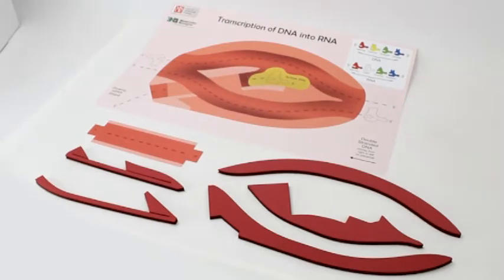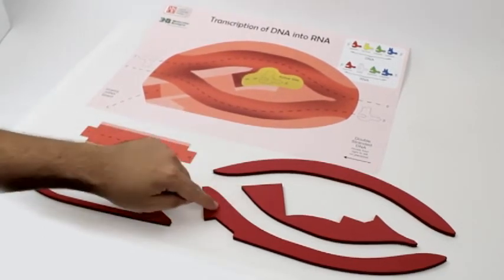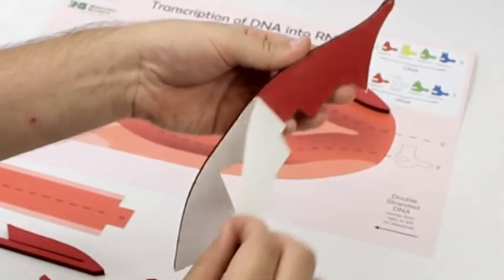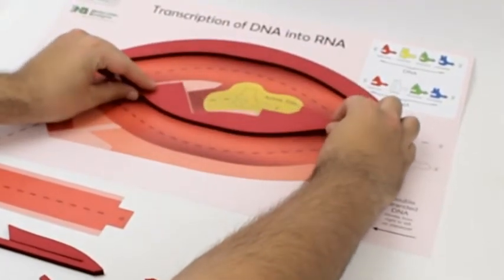The transcription placemat requires a little extra assembly. Begin by placing the three lower pieces, shown here, onto the placemat. Be extra careful to make sure that these three pieces are placed as accurately as possible.